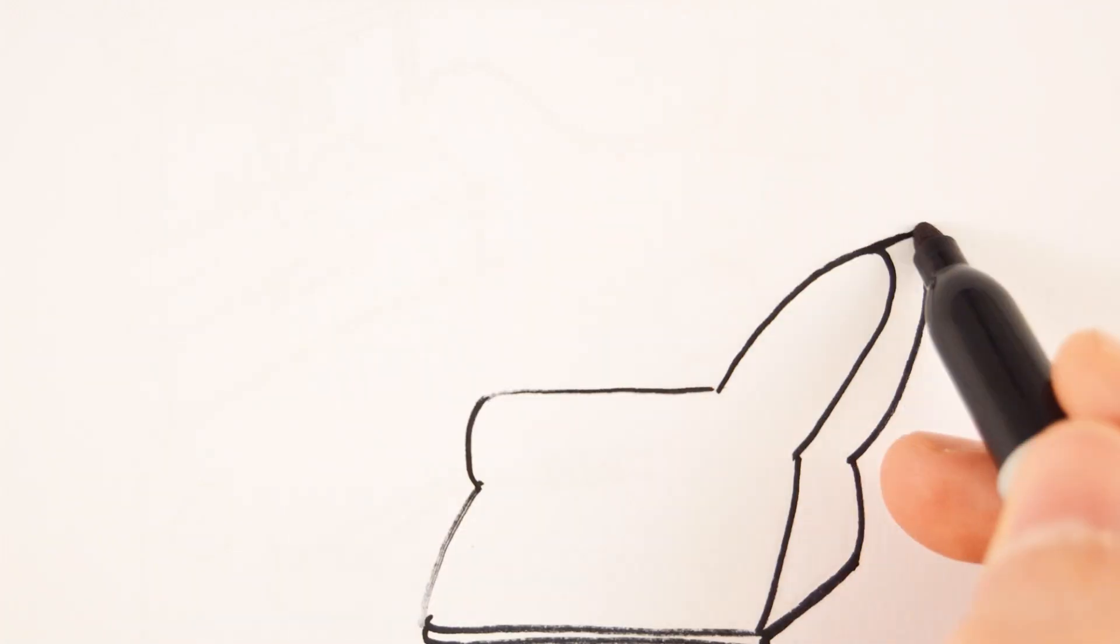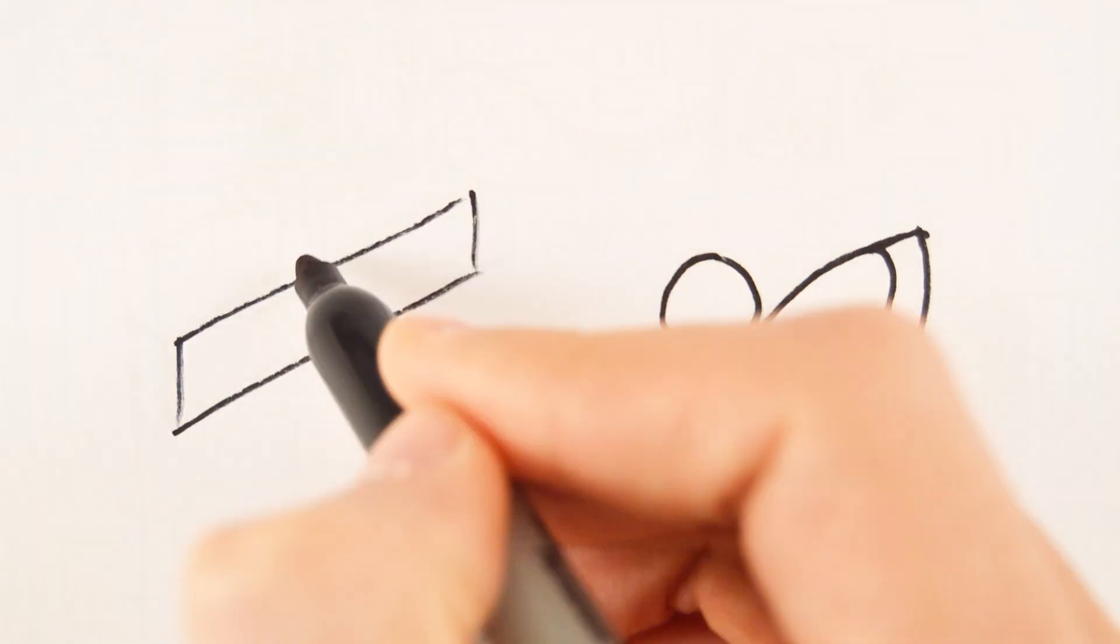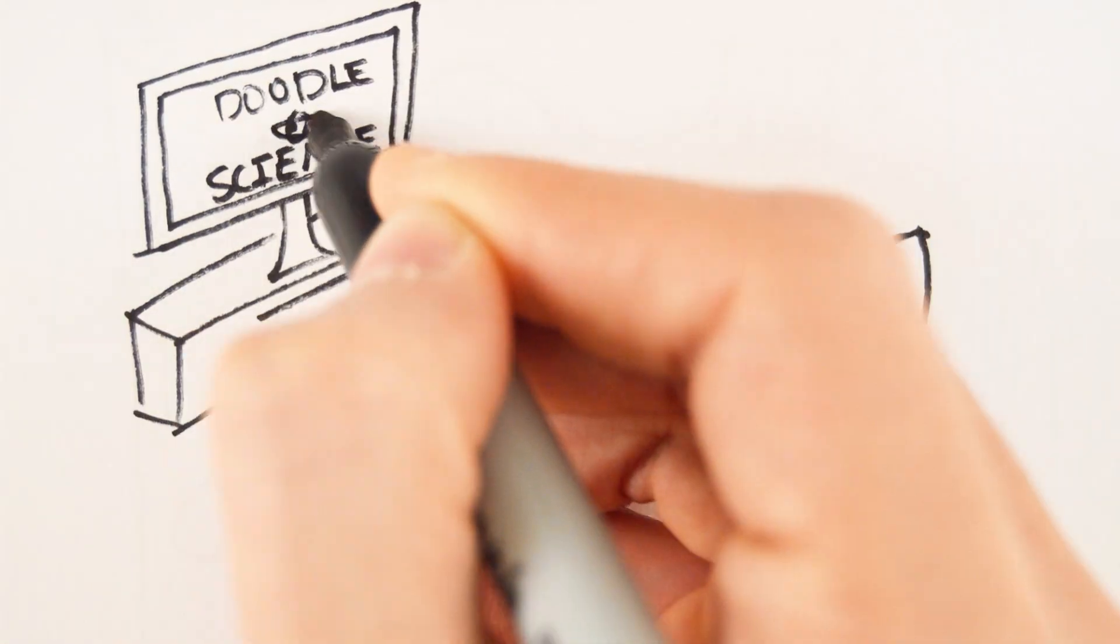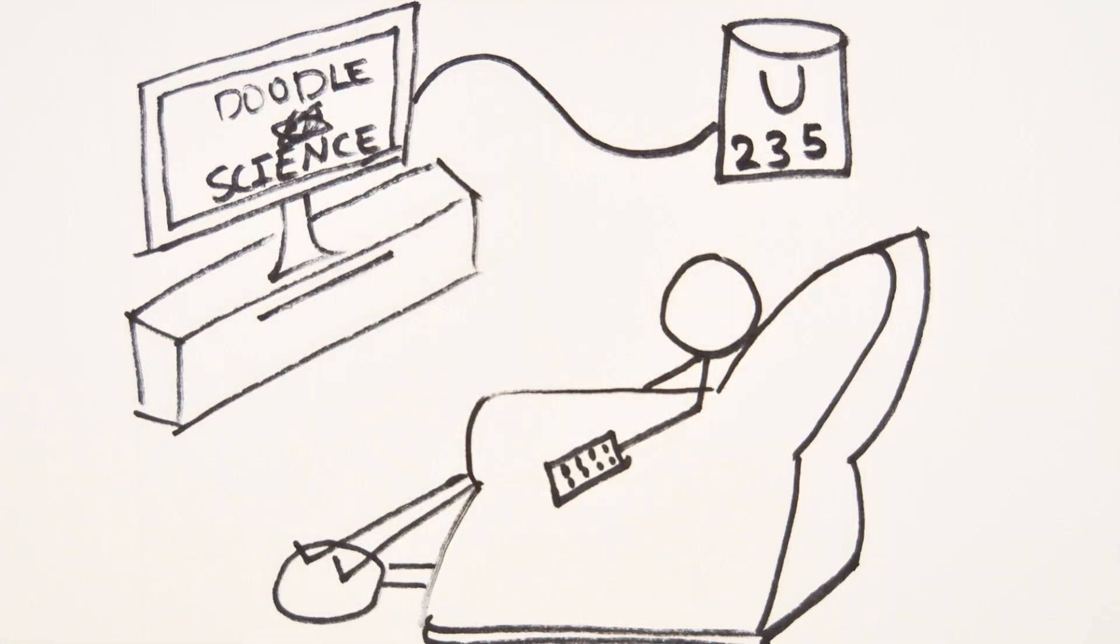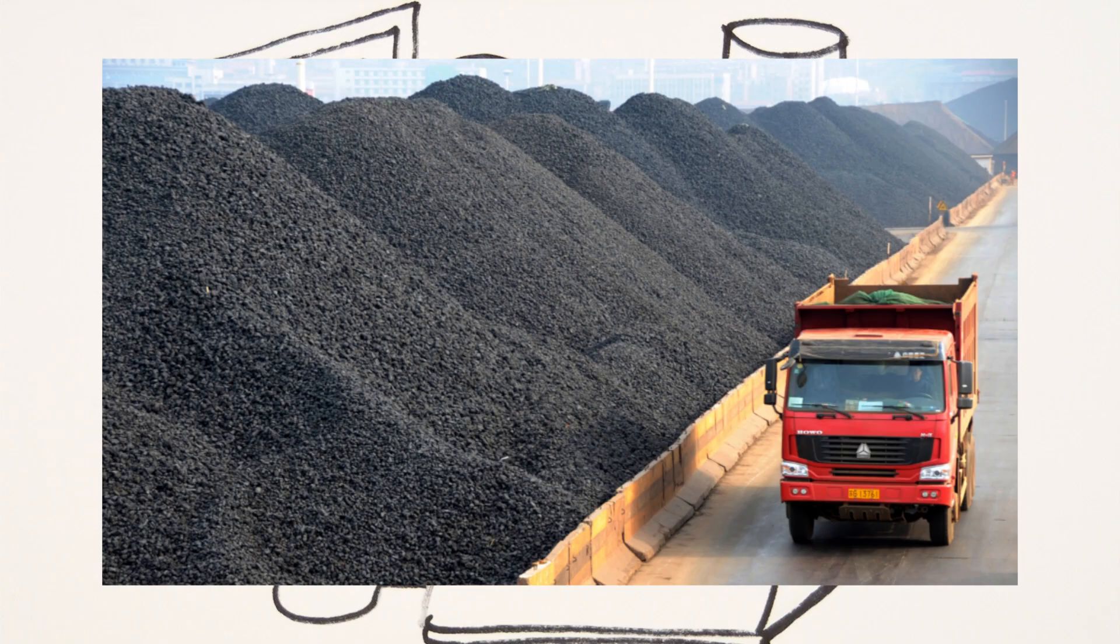A lot of energy is released during nuclear fission, and I mean a lot. You could meet the demand of an average American every year with just 275 grams of natural uranium. That's equivalent to burning 4.4 tons of coal.